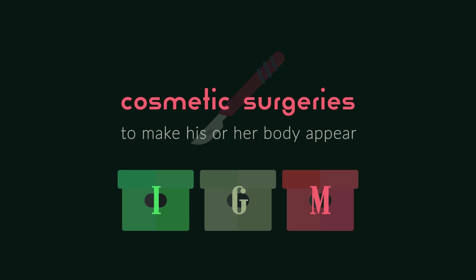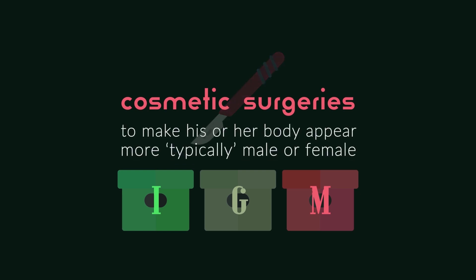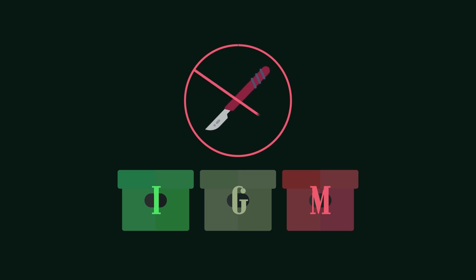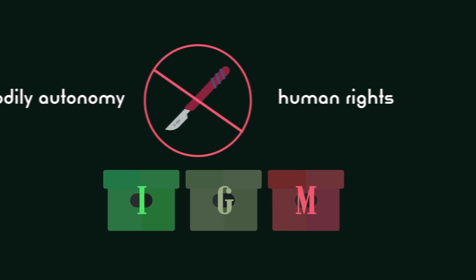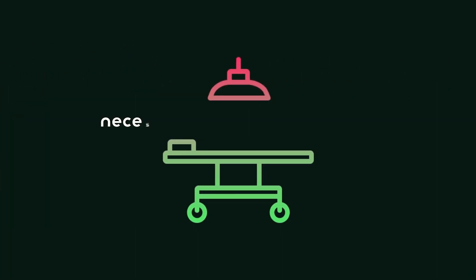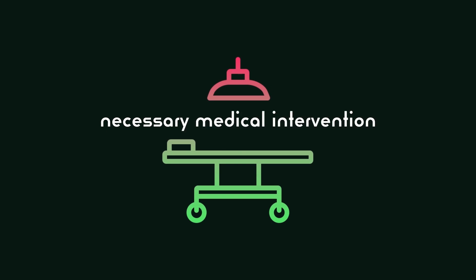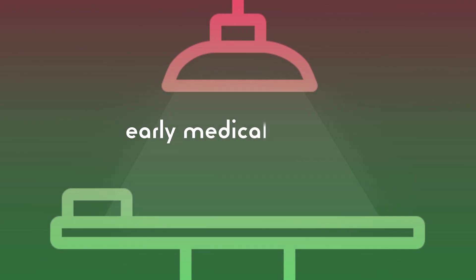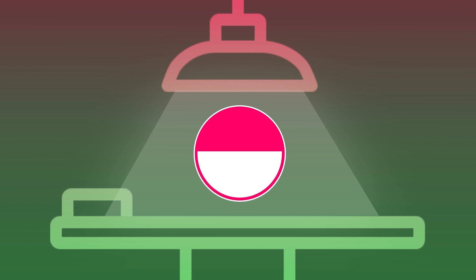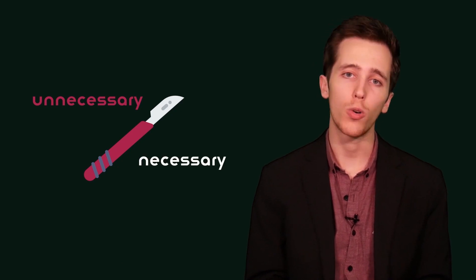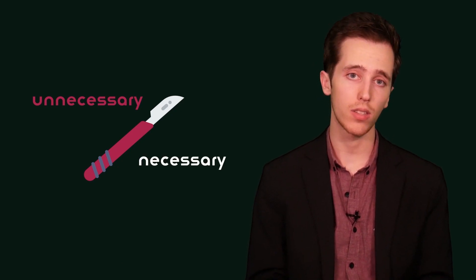IGM refers to cosmetic surgeries conducted on an infant to make his or her body appear more typically male or female. Intersex individuals oppose IGM as a violation of their bodily autonomy and human rights. While IGM is a violation of human rights, it should not be confused with necessary medical intervention. There are instances which require early medical help to prevent fatality of the child, such as the salt-wasting variety of congenital adrenal hyperplasia. The important distinction between unnecessary and necessary medical surgeries is critical for parents of babies born with DSDs to understand.